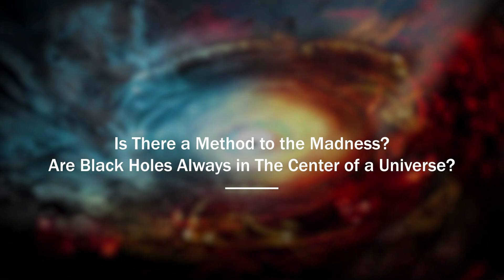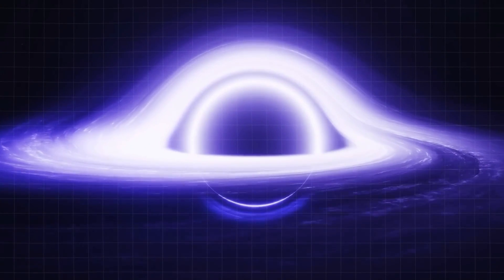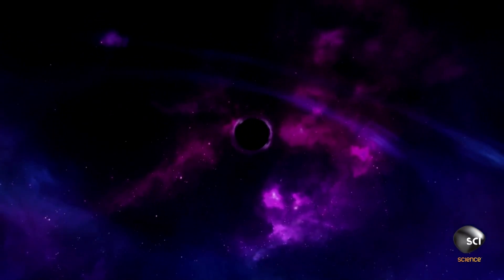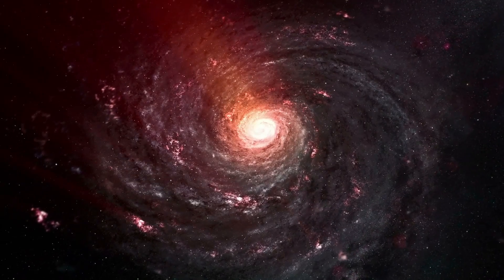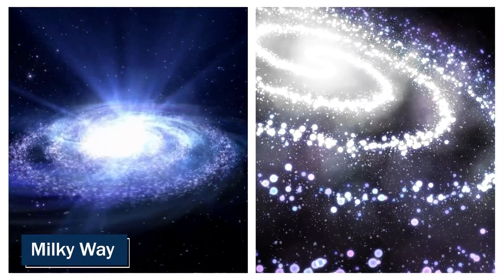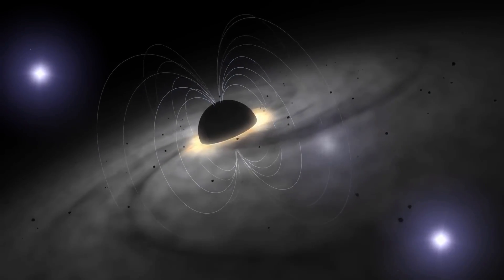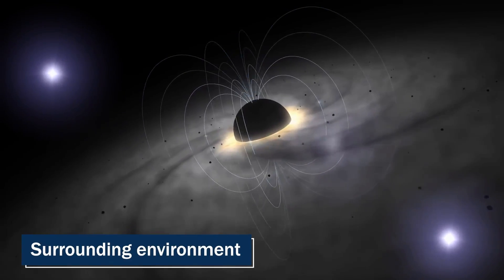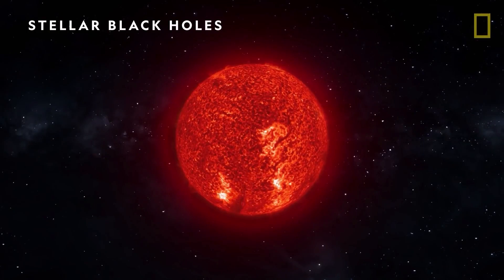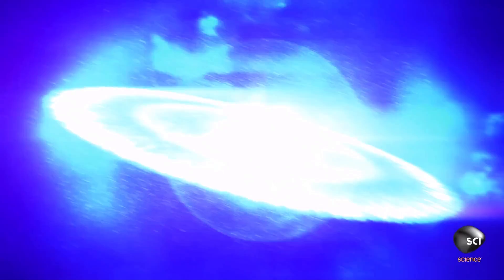Is there a method to the madness? Are black holes always in the center of a universe? Black holes are some of the most mysterious and fascinating objects in the universe. They are formed when a star collapses under its own gravity, creating an extremely dense object with an intense gravitational pull. Most galaxies, including our own Milky Way, are believed to contain at least one black hole at their center, and some galaxies are believed to contain several. These black holes can be detected based on their effects on their surrounding environment, such as emitting large amounts of radiation or bending light from distant stars.